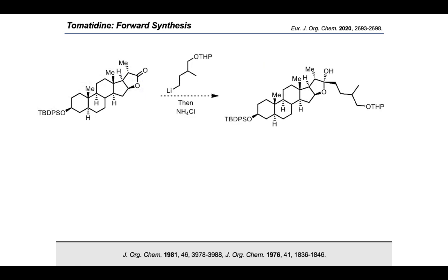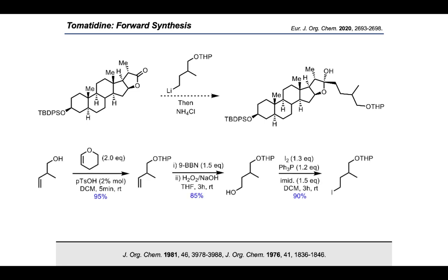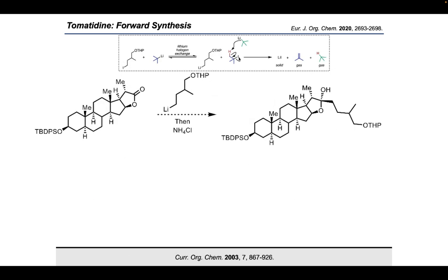To test the reaction, we generated the desired alkyl lithium in racemic form. This short synthesis began from racemic butanol, protected as its THP ether using 3,4-dihydropyran and catalytic p-toluenesulfonic acid in 95 percent yield. The THP moiety was chosen for its resistance to strong bases. This alkene was then subjected to hydroboration using 9-BBN followed by standard oxidative workup with hydrogen peroxide and sodium hydroxide to give the primary alcohol in 85 percent yield. This alcohol was then converted via an Appel reaction to generate the desired primary alkyl iodide in 90 percent yield.